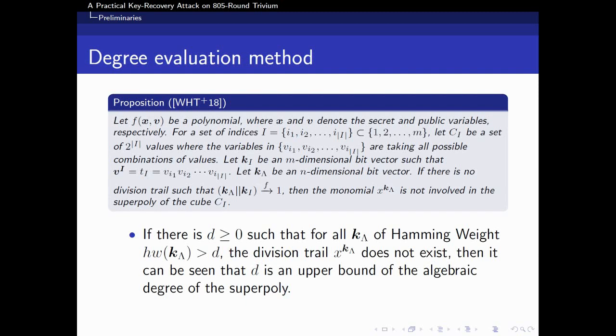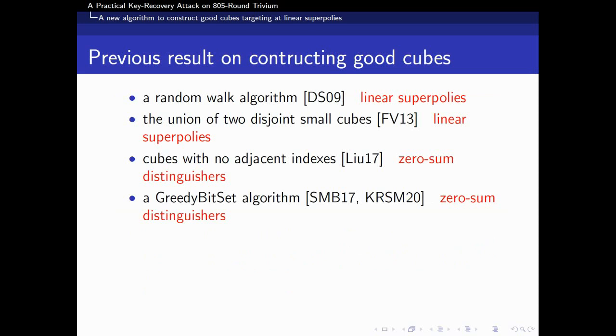Based on division property, Wang et al. proposed a degree evaluation method, which could estimate the upper bound of the degree of superpolys. According to the proposition proposed by Wang et al., if there is d such that for all k_λ with Hamming weight larger than d, the division trail x^{k_λ} does not exist, then it can be seen that d is an upper bound of the algebraic degree of the superpoly.